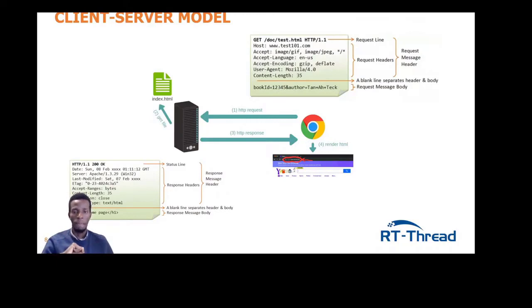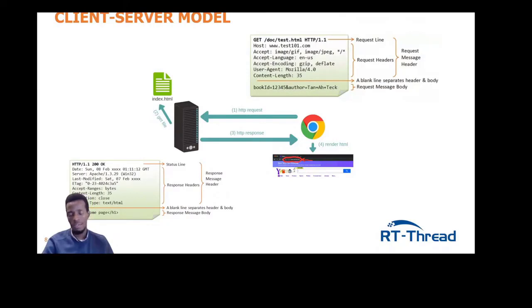HTTP defines a set of rules that govern how computers communicate in a network. We have web clients and web servers. Clients make requests to servers — for files, pages, or media like images and videos. The servers have these things stored in their hard disk, flash memory in the case of embedded systems, or hardware storage. When the client makes a request following the HTTP protocol, it receives a response from the server. Each request has a start line, a header, and a body.